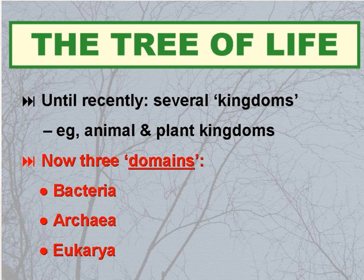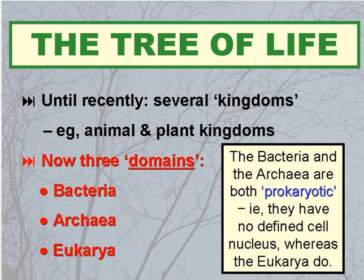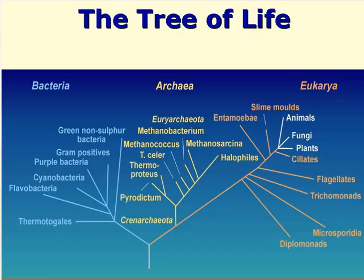The Bacteria and the Archaea comprise what we generally refer to as bacteria, with a small b. The Bacteria and the Archaea are both prokaryotic, which is to say they have no defined cell nucleus. The Eukarya, on the other hand, do.